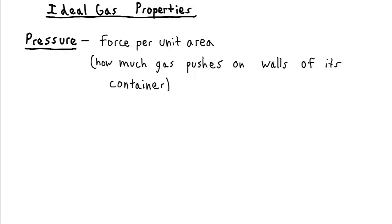A nice thing about ideal gases is that it's very easy to characterize their properties. We're especially going to be interested in their pressure, temperature, and volume, and how those relate to how many moles of gas are present. Pressure, by technical definition, is the amount of force per unit of area — basically how much the gas pushes against the walls of whatever container it's been placed in.